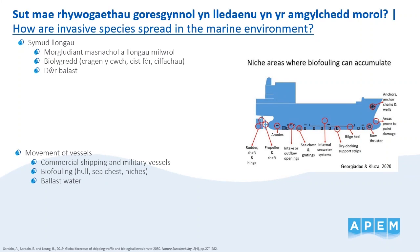Another way INNS can be spread by vessels is in ballast water. This is water that is taken up into tanks at one location to stabilise the vessel while underway, and is then unloaded in another location. Ballast water can contain INNS, their larvae or propagules, which are then introduced into a new port and may establish and cause issues. However, this vector is addressed by the ballast water convention, of which the UK is a signatory, and ballast water must be exchanged offshore in designated areas or treated by onboard treatment systems to remove or kill any organisms.